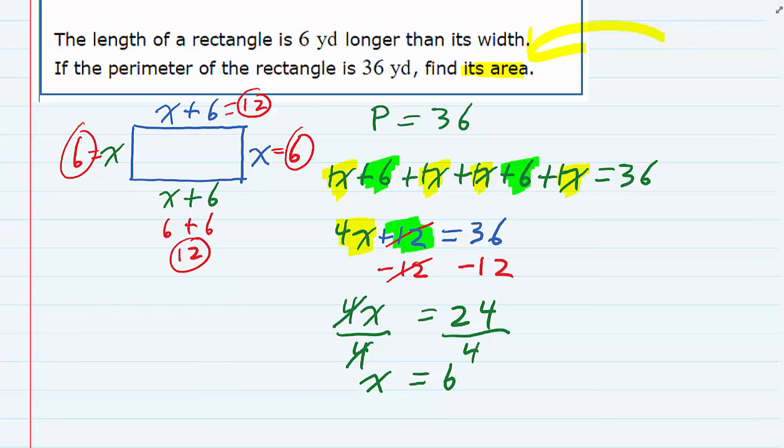So to find the area, we're going to use our formula that says area equals length times width. And now that we know the length and width, we're going to plug those in. Area equals the length, 12 yards, and the width is 6 yards.